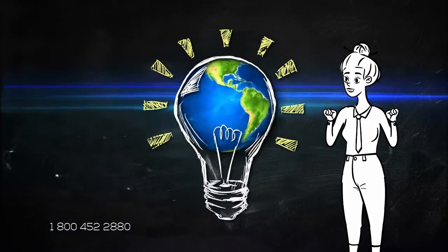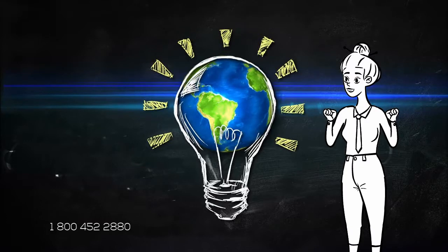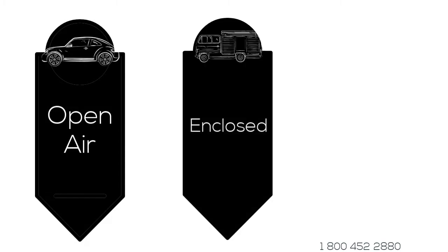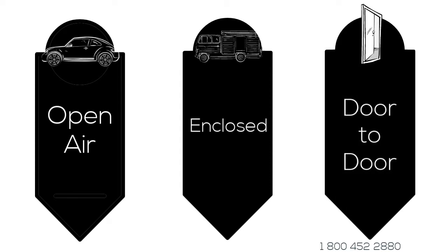We offer different types of shipping services that will fit any budget. Open Air, the fastest and cheapest way to transport your vehicle. Enclosed, a little more time to deliver, but protection from all the elements. Door to Door, a way to deliver your vehicle right to your doorstep.